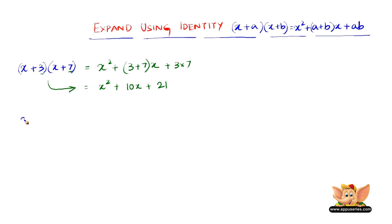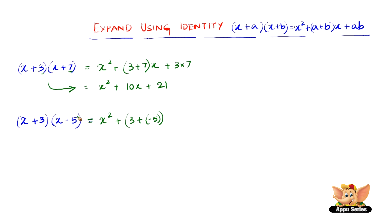Let us consider another one which is x plus 3 into x minus 5. So we have x squared plus 3 plus minus 5, because b here is minus 5. Expanding it, we have x squared plus 3 plus minus 5 is minus 2 into x, plus 3 into minus 5 is minus 15.